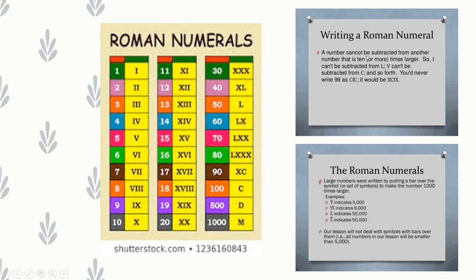A number cannot be subtracted from another number that is 10 times larger. So I cannot be subtracted from L, nor V from C. You would never write 99 as CIC — it should be XCIX (XC = 90, IX = 9). For large numbers, a bar over a symbol makes it 1000 times larger: V̄ = 5000, X̄ = 6000 (using 6 × 1000), L̄ = 50 × 1000 = 50,000.